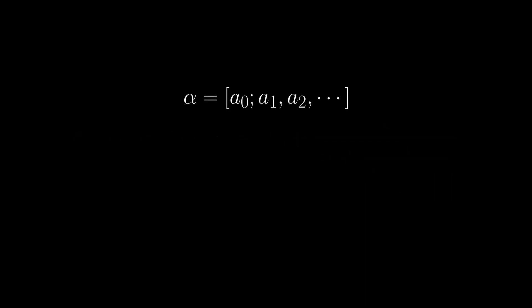If we denote alpha as the infinite continued fraction, then by truncating it at different layers, we have these different fractions which get closer and closer to alpha. We also denote the truncated continued fraction at the nth layer to be pn over qn.